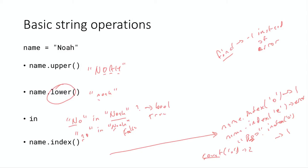One important function I forgot to mention is the len function — len means length. If you say len of some string, it tells you the number of characters in that string. The len of the string 'Noah' is four because there are four characters. That's definitely one you'll use very frequently. There are a lot more functions beyond these simple ones that you can look up online when the time calls for it.